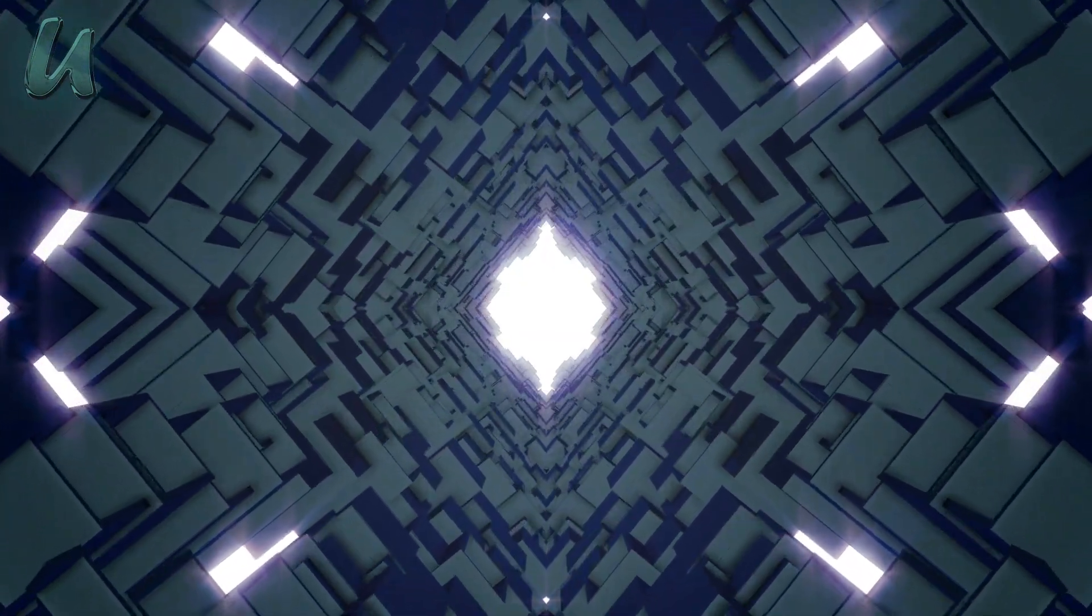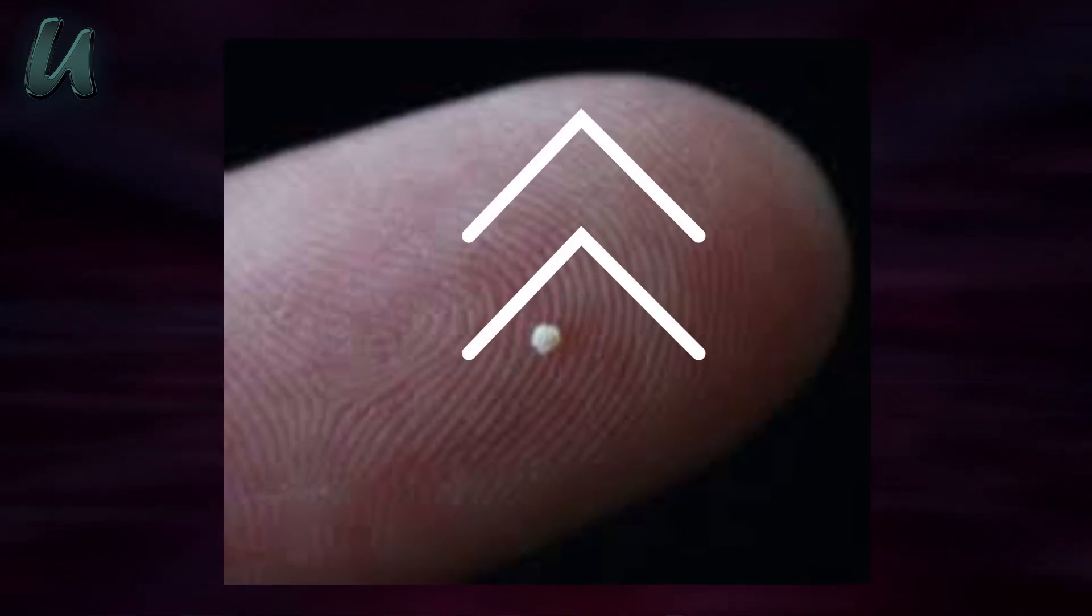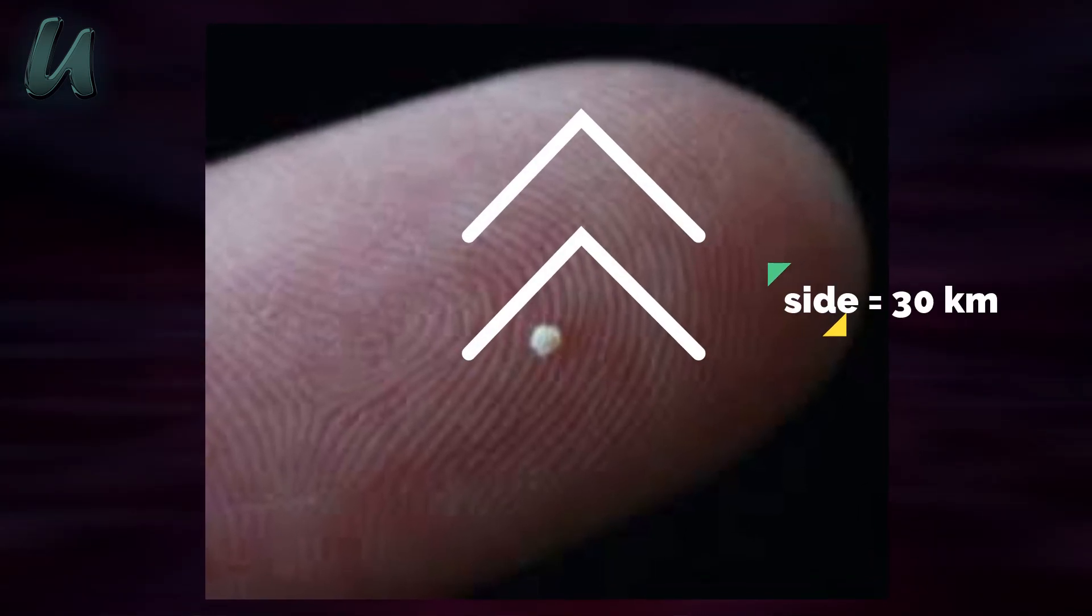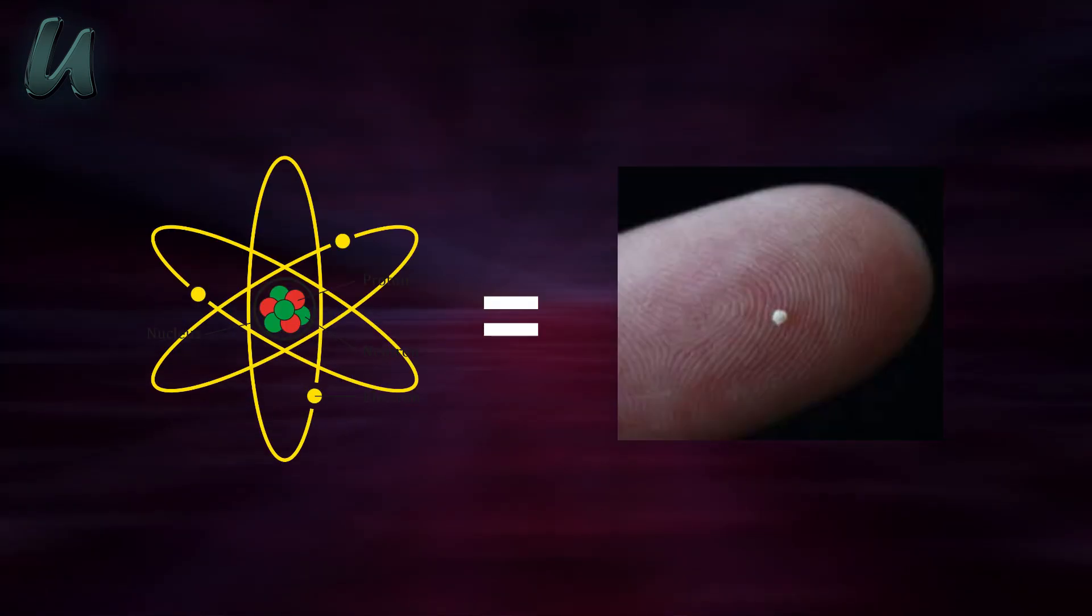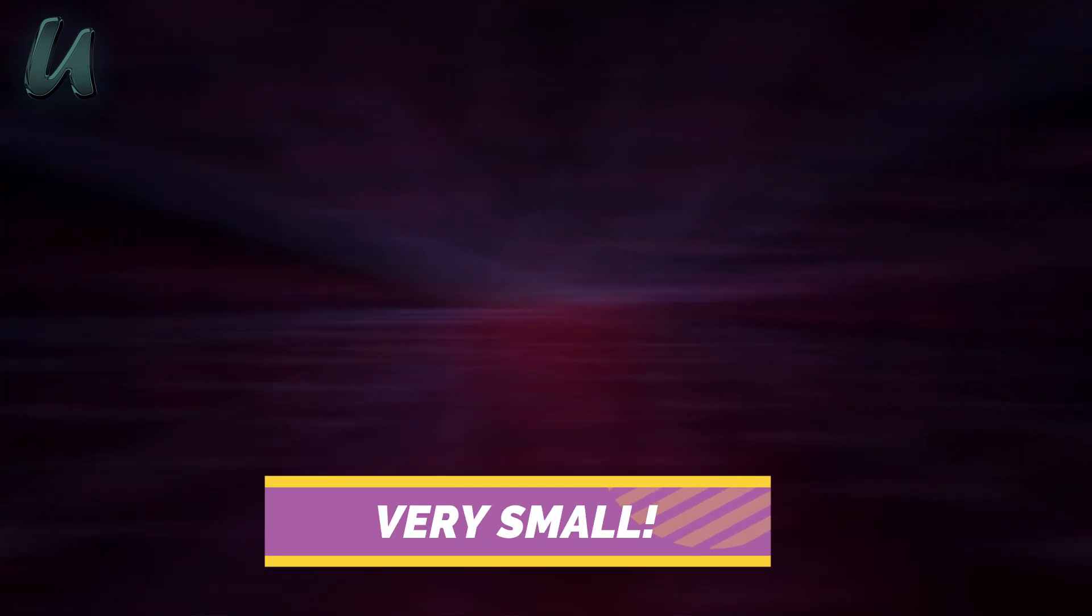Let's put that in perspective. If I took a grain of sand and scaled that grain up so that along each side was 30 kilometers, then the size of an atom would be the size of a grain of sand. That's how small atoms are.